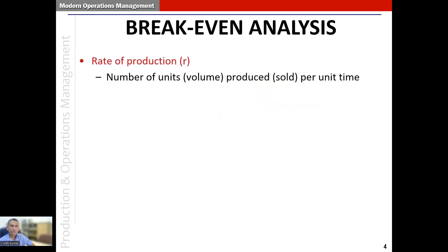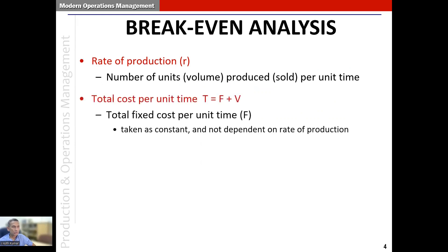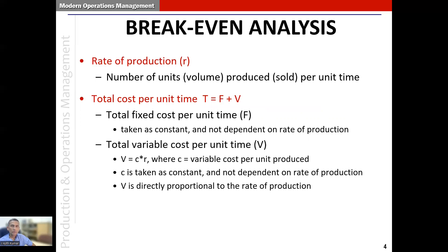The rate of production, small r, is defined as the number of units produced or sold per unit time. The total cost per unit time, capital T, equals capital F plus capital V, where capital F represents the total fixed cost per unit time — in this analysis it's a constant, not dependent on the rate of production. The total variable cost per unit time, capital V, equals small c times small r, where small c is the variable cost per unit produced, covering materials, labor, and so on.